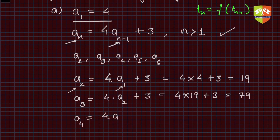Next is a4, and a4 is clearly 4 times a3 plus 3. So it is 4 times 79 plus 3, and if you calculate it, it is nothing but 316 plus 3, so it is 319. Very easy.